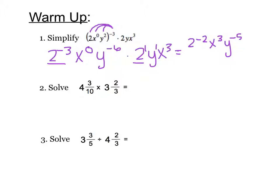Negative exponents go down to the bottom. x cubed over 2 squared times y to the 5. And now we can simplify 2 squared, so our final answer is x cubed over 4y to the 5th.